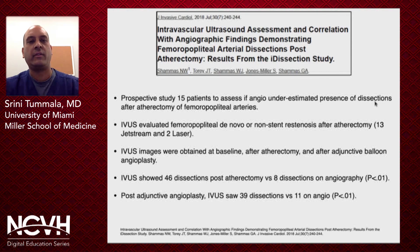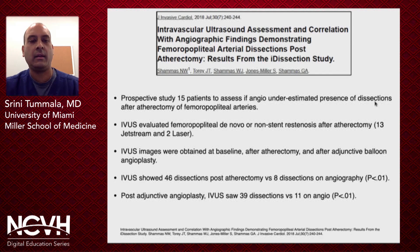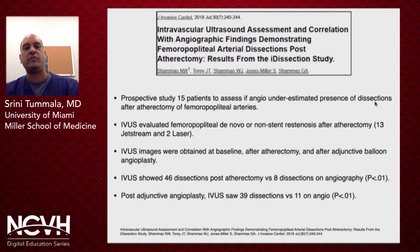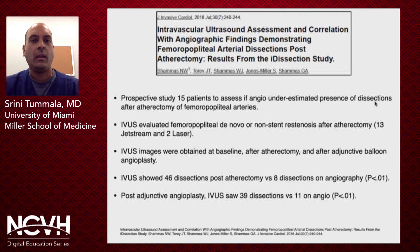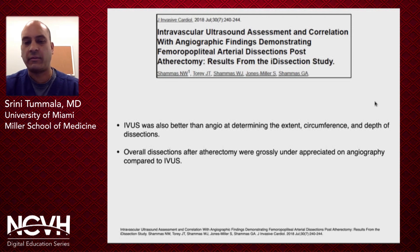There's also a correlation with dissections. A small study of about 15 patients used IVUS to evaluate de novo FEMPOP stenosis and non-stent restenosis after atherectomy. IVUS images were obtained at baseline, after atherectomy, and after additional balloon angioplasty. IVUS showed a significantly larger number of dissections post-atherectomy versus angiography, and post additional angioplasty IVUS also detected significantly more dissections. IVUS was better at determining the extent, circumference, and depth of dissections, with dissections after atherectomy being underappreciated by angiography alone.